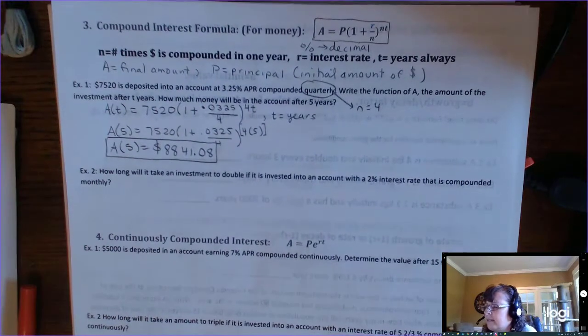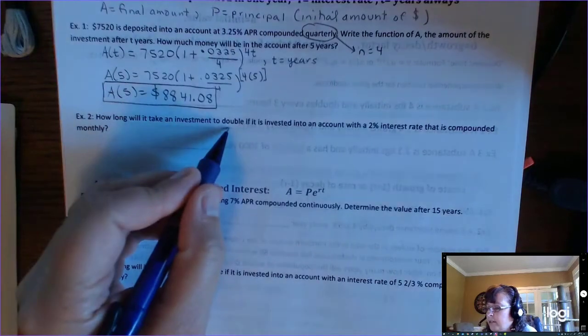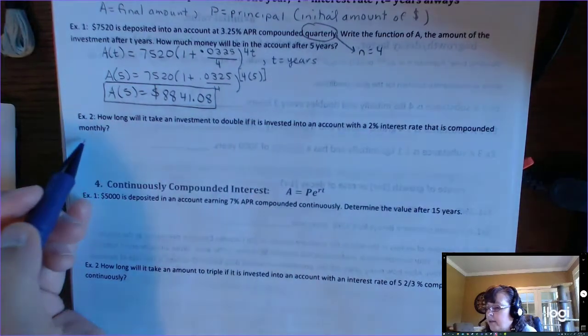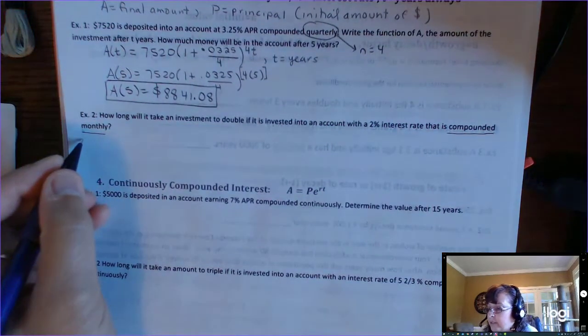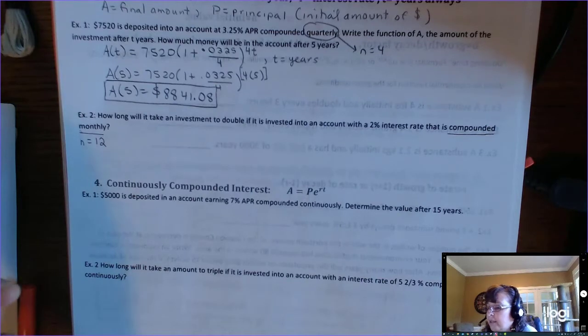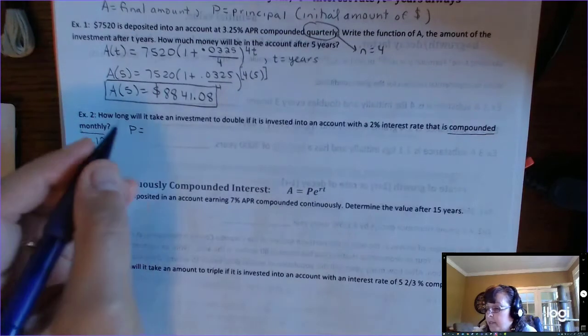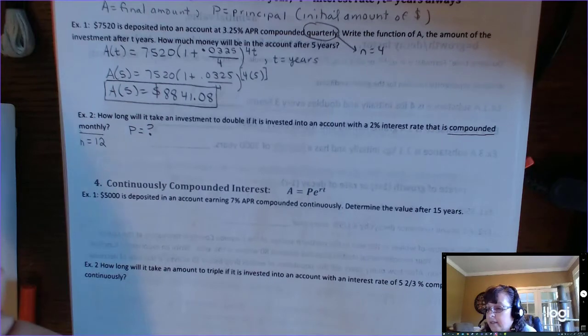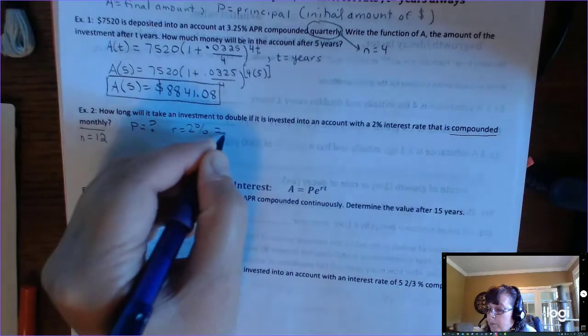All right. Now, let's look at a second one. This is interesting. It says, how long will it take an investment to double if it is invested into an account with a 2% interest rate that is compounded monthly? So once you see the word compounded, after it is going to be what your N is. Compounded monthly would be 12 times a year. Your P, what is your P? Well, if you read the problem again, you are told nothing about your initial amount. Now, your R is 2% or 0.02.